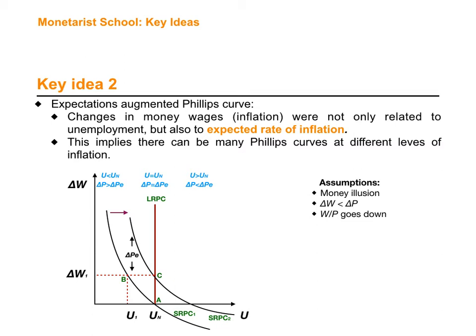On the long-term Phillips curve, unemployment is equal to the natural rate of unemployment. To the right of the long-term Phillips curve, unemployment is higher than the natural rate of unemployment. The natural rate of unemployment is like the unemployment rate that characterizes the economy — the rate at which the real factors of the economy are organized.